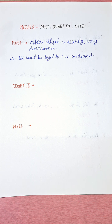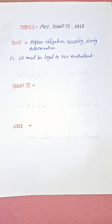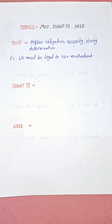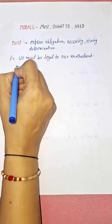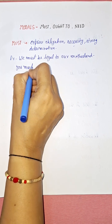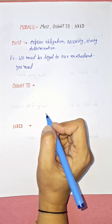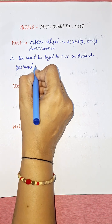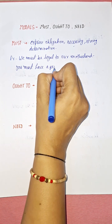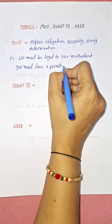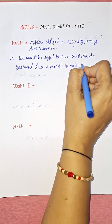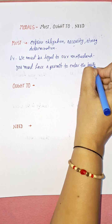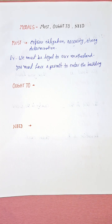For the use of necessity, for example: 'You must have a permit to enter the building.' Necessity means when something is very important, very urgent. So here, a requirement is being shown — it is a necessity that you must have a permit to enter the building.